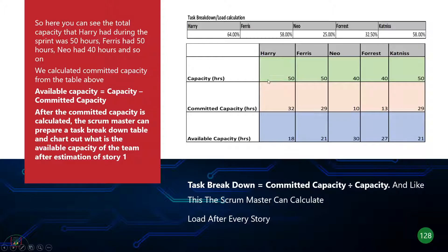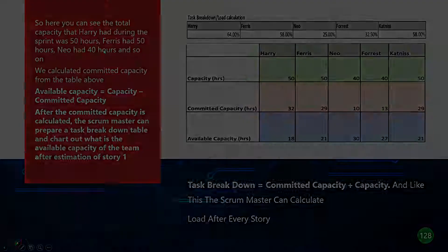As a scrum master building this out, you need to account for holidays, vacation days, company holidays, and focus factors as covered in the seven steps, then figure out capacity based on the hours provided by the team. For example, the total capacity for Harry during the sprint was 50 hours, and Ferris also had 50 hours, assuming they're 100% committed.